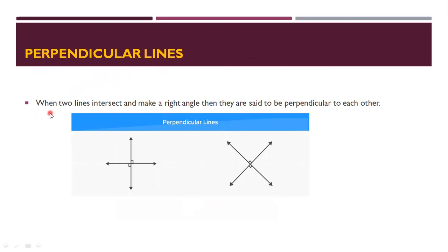Next is perpendicular lines. When two lines intersect and make a right angle, they are said to be perpendicular to each other. Where the two lines intersect and form a right angle — that is, exactly 90 degrees — that is called perpendicular lines. For example, line AB is perpendicular to line CD.